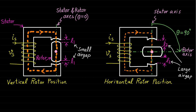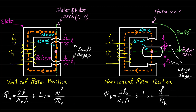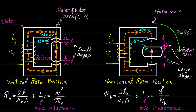If we ignore the magnetic material by assuming the permeability of the magnetic material equals infinity, the reluctance and inductance of these two cases can be calculated accordingly. Note that the fringing effect is also ignored, which is why the effective cross-sectional area A of the two cases is the same. Based on these inductances and reluctances, the vertical rotor position will have the maximum inductance and the horizontal position will have the minimum inductance. It is clear that the inductance depends on the geometry only.